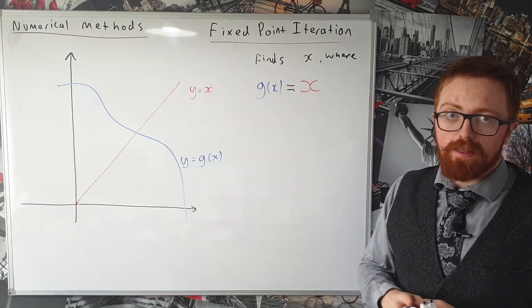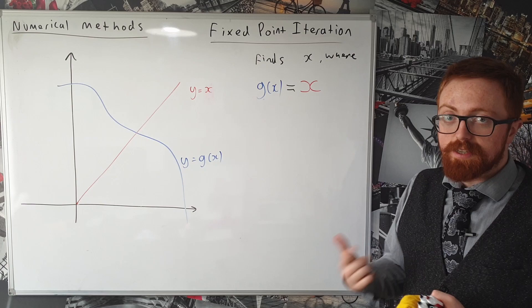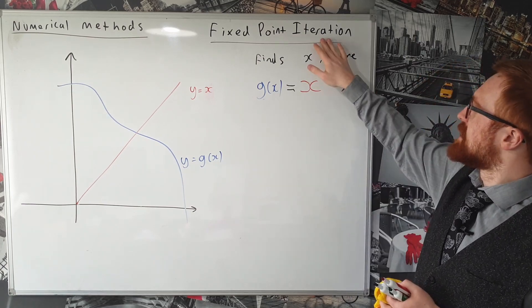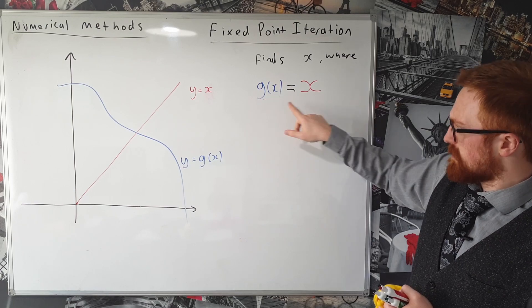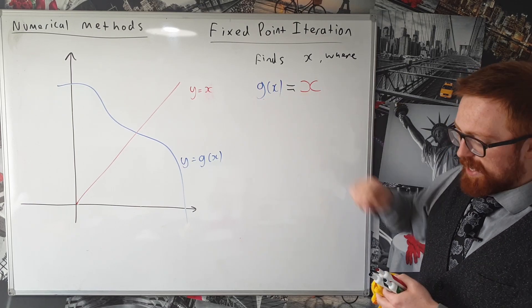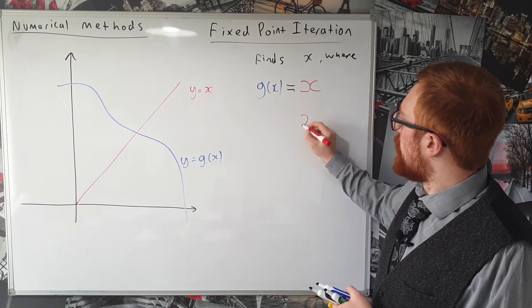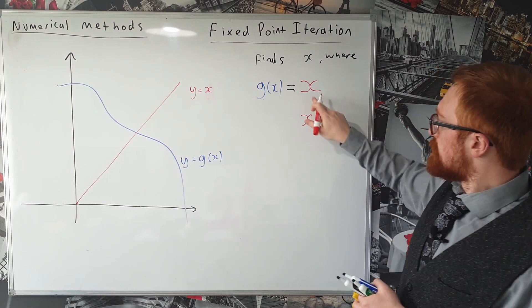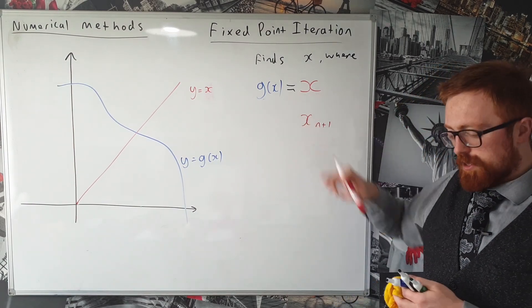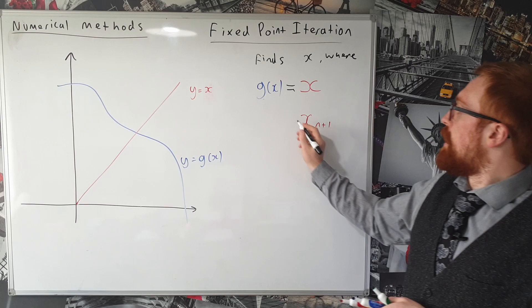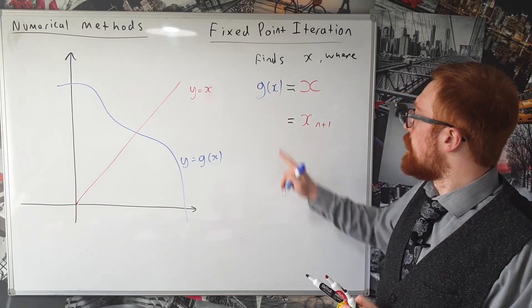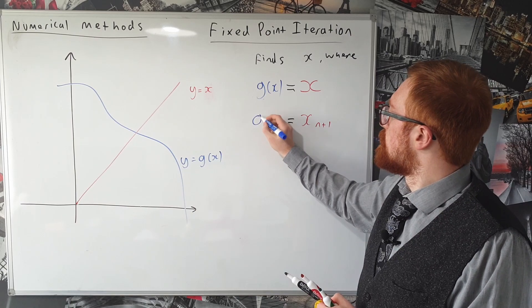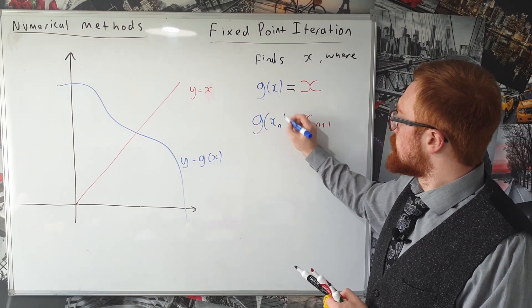Now the way we do that is we set up a recursive sequence. So that's why it's iteration, because it's an iterative process. And what we do is we change this x here for x_n+1. So this gives us the next term in our sequence and what we do to find that is we substitute the number that we're currently on into g of x. So g of x_n.